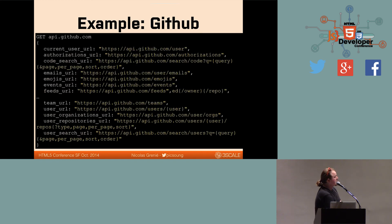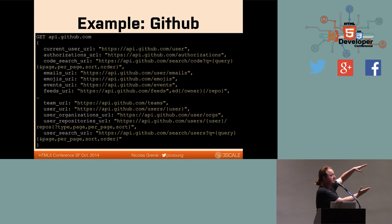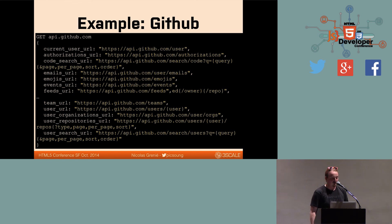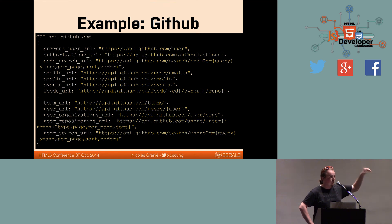An example — that's the example of if you hit api.github.com. Instead of rendering the HTML page as documentation, they give you URLs to other resources. So from there you can go on events and find all the events, go on users, emojis, all the cool stuff that GitHub is doing. And you will have the same kind of behavior in other resources, going through all the links.